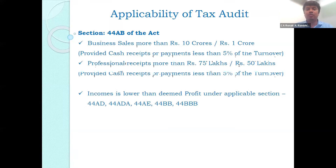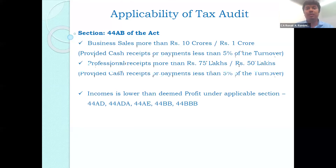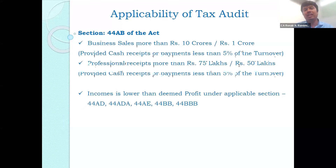If this condition is not fulfilled, the turnover limit is Rupees 75 lakhs, along with the provision that cash receipts or cash payments should be less than five percent of turnover. If this is again not fulfilled, the turnover limit goes to 50 lakhs for professional receipts. Further, assessees under deemed profit sections 44AD, 44ADA, 44AE, 44BB, and 44BBB are also liable for tax audit.